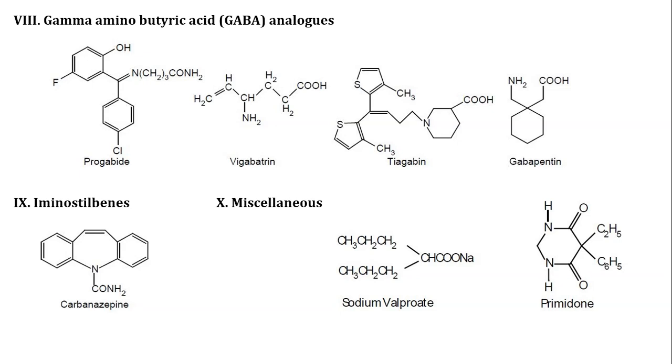Next, Iminostilbene — example: Carbamazepine. And in miscellaneous: Sodium Valproate and Primidone. So these are the examples of anticonvulsant drugs in the different categories. Thank you. In the next lecture, we will continue with the synthesis of some selective drugs and structure-activity relationships of anticonvulsant drugs.